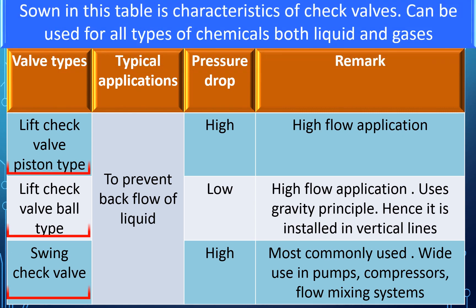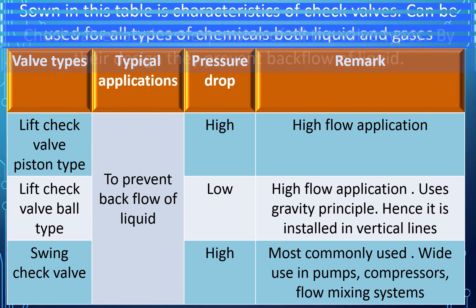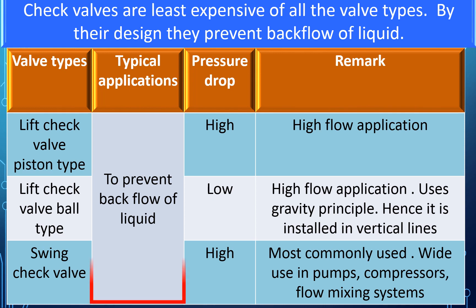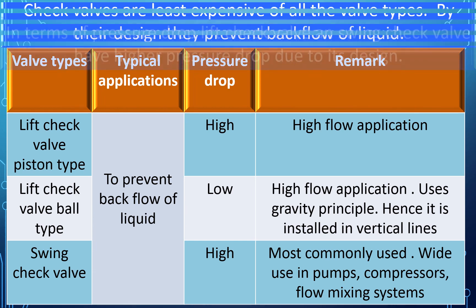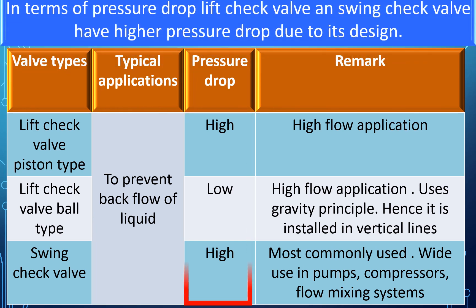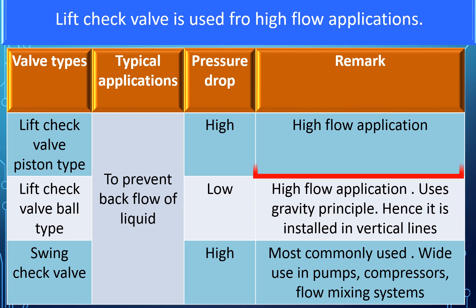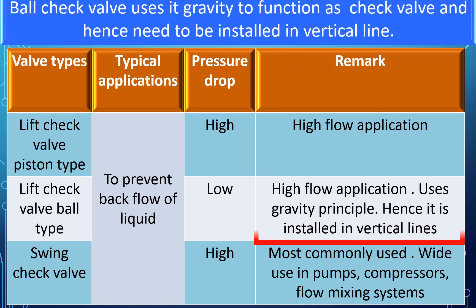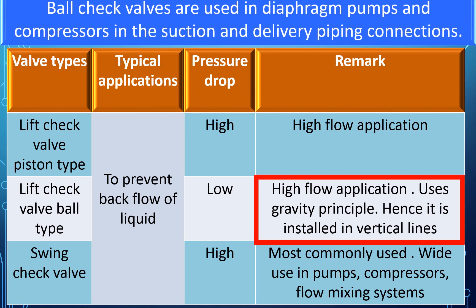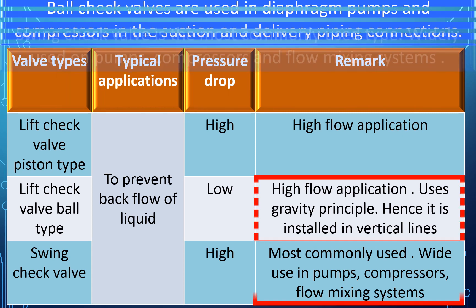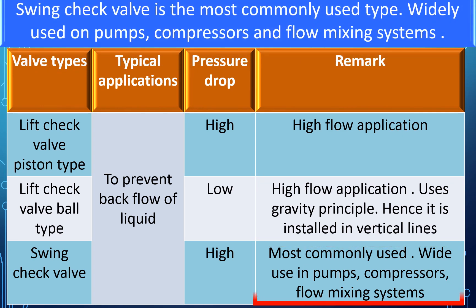This table shows the types and characteristics of check valves. They can be used for all types of chemicals, both liquids and gases. Check valves are the least expensive of all valve types. By design, they prevent backflow of liquid. Lift check valves and swing check valves have higher pressure drop due to their design. Lift check valves are used for high flow applications. Ball check valves use gravity to function and hence need to be installed in vertical lines. Ball check valves are used in diaphragm pumps and compressors. Swing check valves are the most commonly used type, widely used on pumps, compressors, and flow mixing systems.